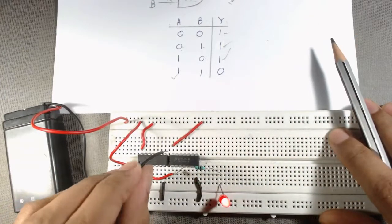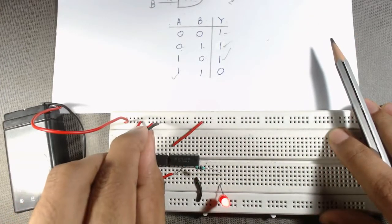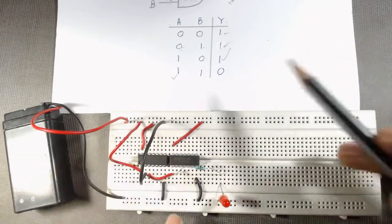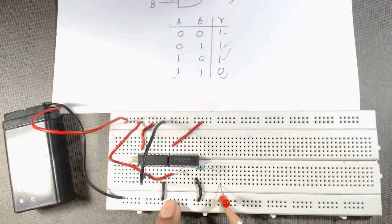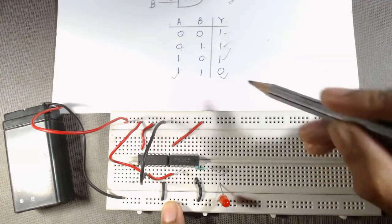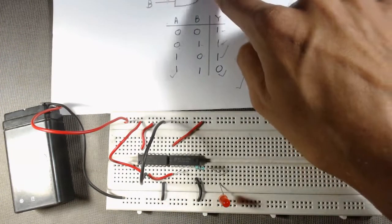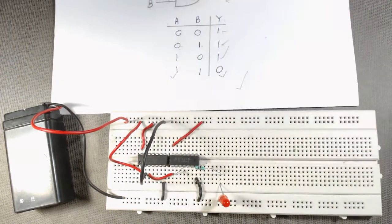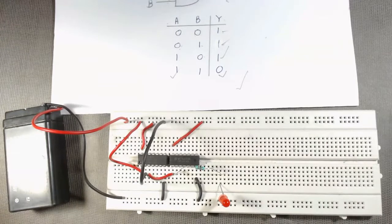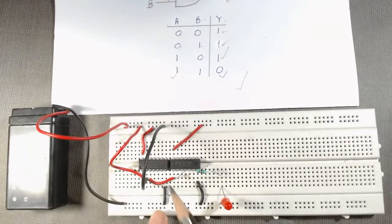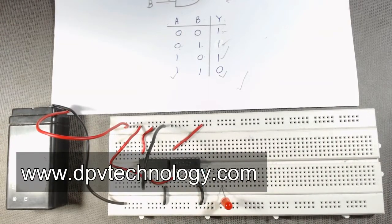For the last case, when A is 1 — already connected to VCC — and B is 1, meaning B is also connected to VCC, we can see the output is 0 and the LED is off. The truth table of our NAND gate is verified. Thank you for watching this video. If you like our videos, please don't forget to subscribe to our channel. You can also buy electronics components and projects from our website at www.dpbtechnology.com.